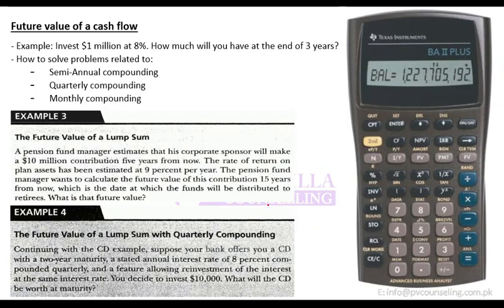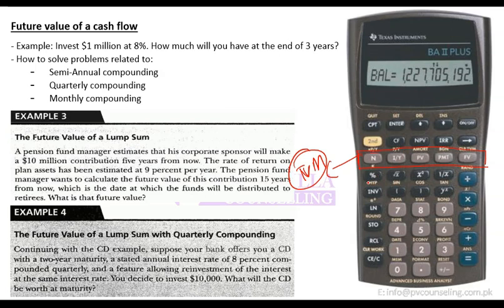This is your financial calculator. This specific row of buttons is for time value of money. Even in Excel, for those who have used it at work or in studies, the same time value of money variables are used — equals to PV, equals to FV, equals to PMT, equals to rate. Those same variables are used by the financial calculator as well.